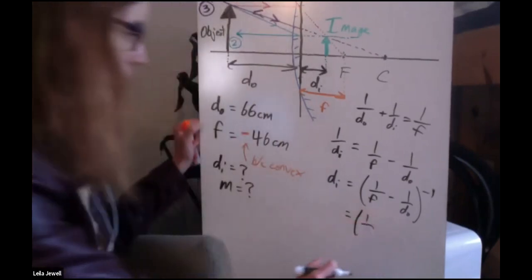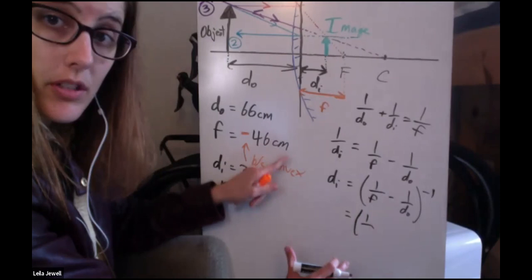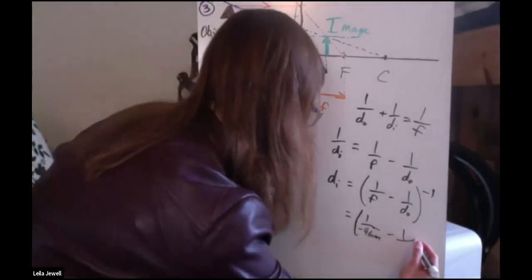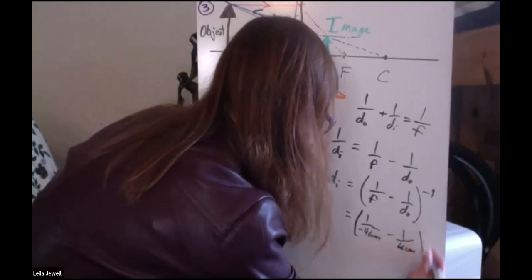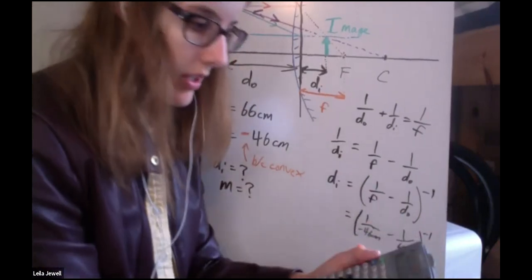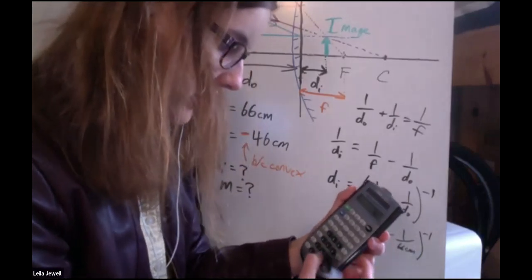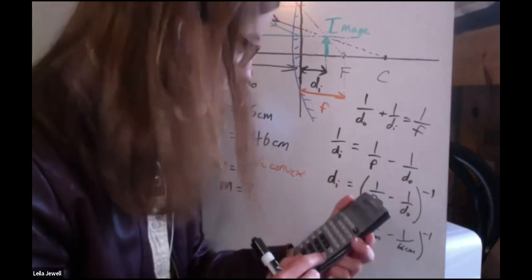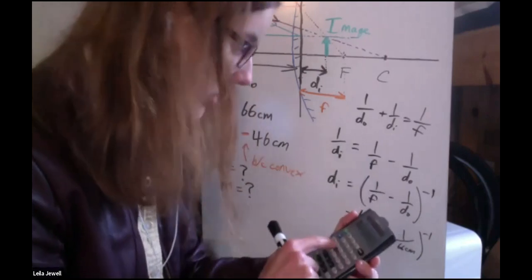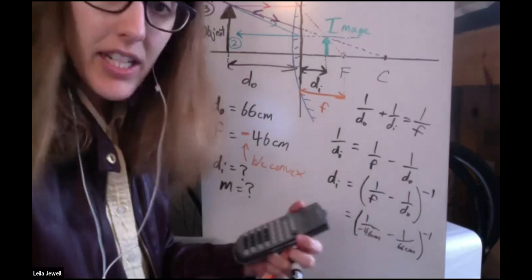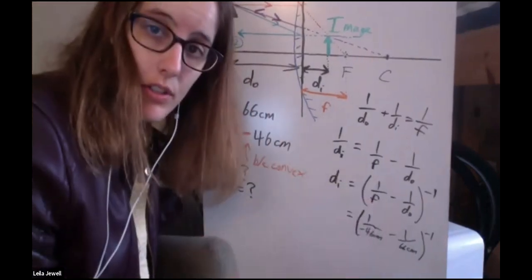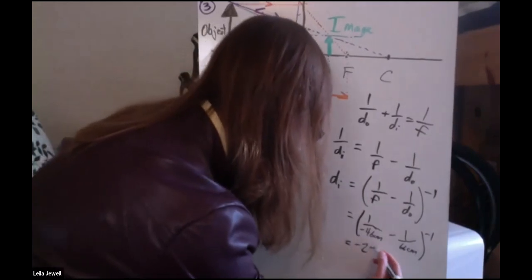We can leave it in centimeters. That'll give us a final result in centimeters. So one over negative 46 centimeters minus one over 66 centimeters, all raised to negative one. Let's plug and chug. I'll put in 46 negative and inverse that, giving me a negative number. Then subtract 66 inverse, so it gets even more negative. Then I need to take the inverse once more, giving negative 27.107. With two sig figs, negative 27 centimeters.